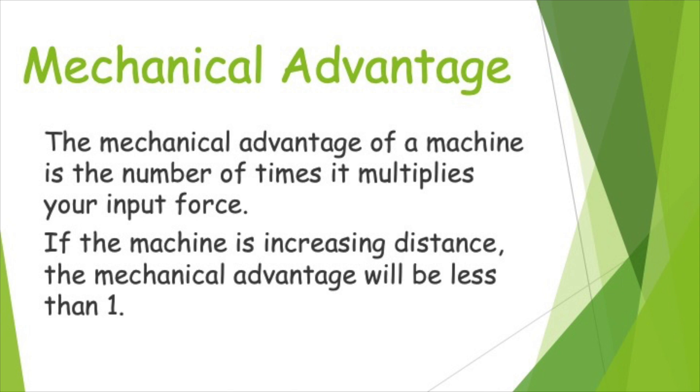Now that we've seen two examples of how machines can either increase or decrease the amount of force you put into them, we need to talk about mechanical advantage. Now mechanical advantage is a number which tells us the number of times a machine multiplies your input force. So if the machine is increasing your distance and decreasing your force, that means that that mechanical advantage number is going to be less than one.